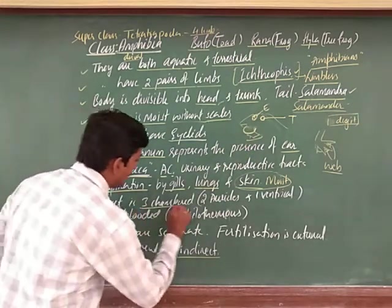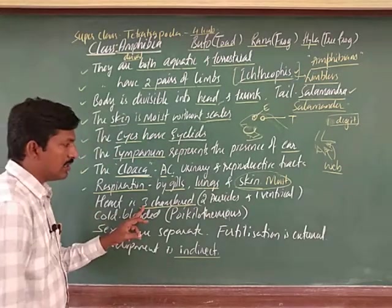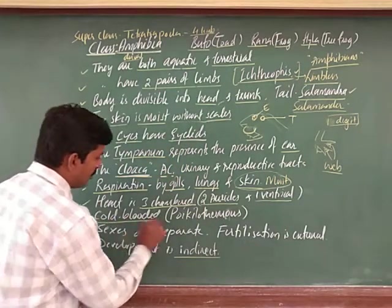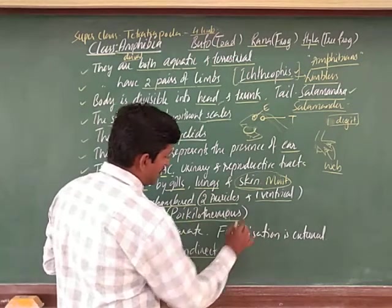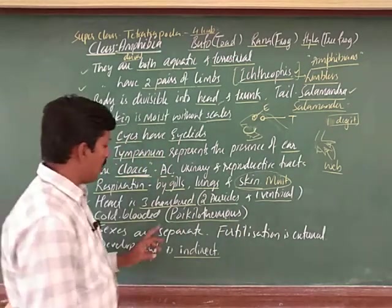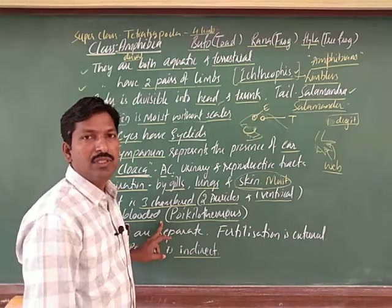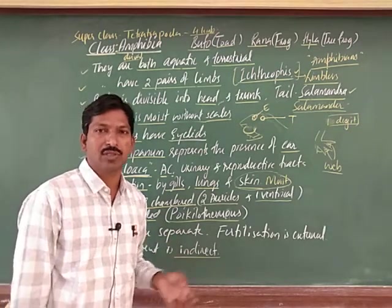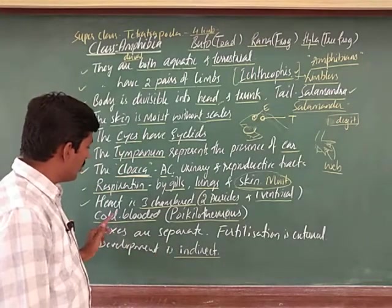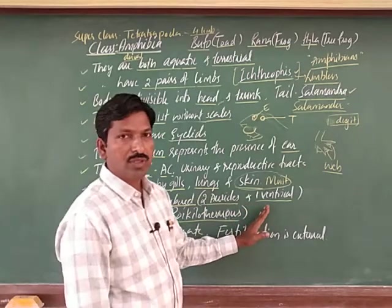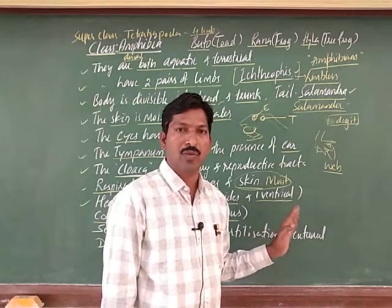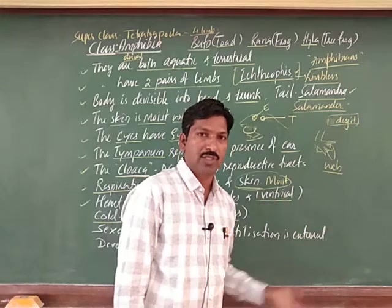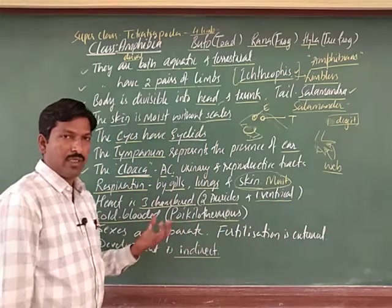The heart is three-chambered: two auricles and one ventricle. These animals are said to be cold-blooded, also referred to as poikilothermic animals, because their body temperature is not constant — they can change their body temperature according to the surrounding environment, surviving in cold water, warm water, or on land.